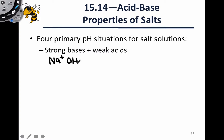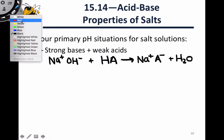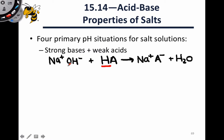Now let's consider reacting a strong base, something like sodium hydroxide, with a weak acid — a good example being acetic acid, which I'll abbreviate as HA. We'll still have a complete reaction because the base is strong, and we end up with Na+, A-, and H2O. A proton is transferred from HA to OH-, generating neutral water. The sodium cation acts as a spectator — it's Na+ in the reactants and Na+ in the products. Because a proton was lost from HA, the remaining A fragment has an additional lone pair and a negative charge, which is why A- appears here.